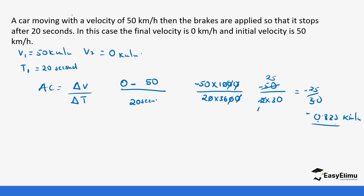The negative sign means it is decelerating or retardation. The car was moving at a certain speed and that speed reduced down to zero kilometers per hour. This means the speed is not increasing but decreasing — that is what we call retardation.